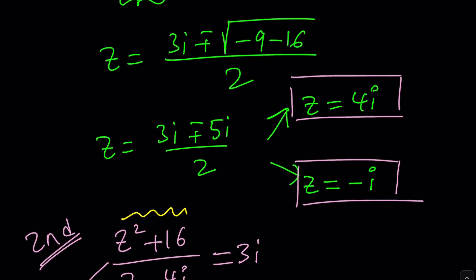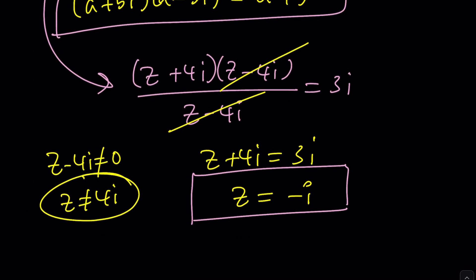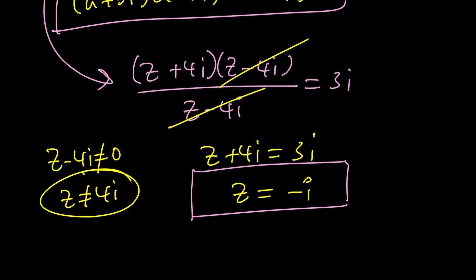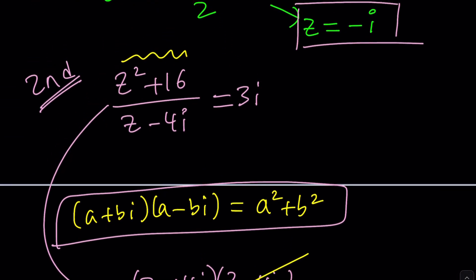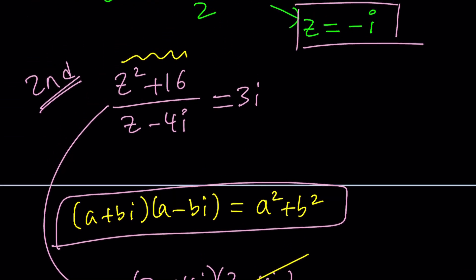But 4i does not work because it makes it undefined. Is it called undefined? Zero over zero. Some people call it indeterminate and some people don't like that. But anyways, are you one of those people?